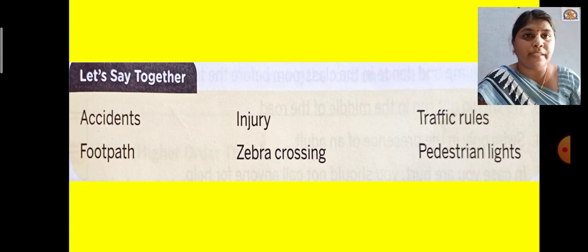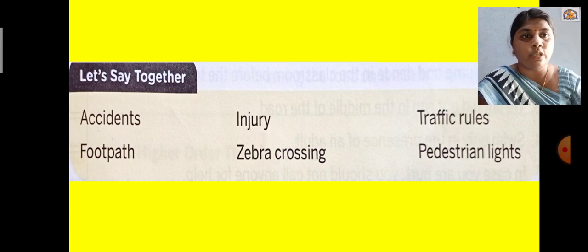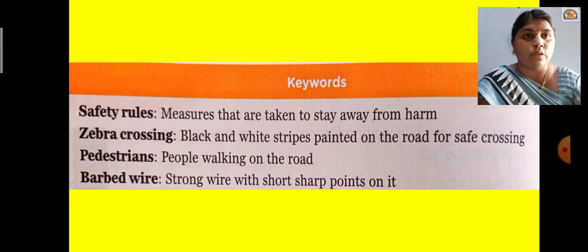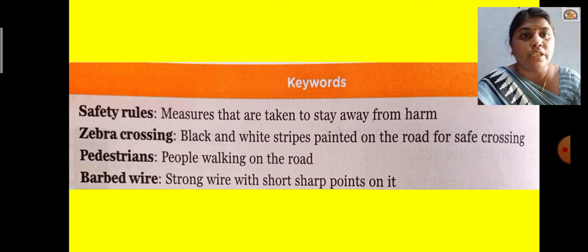Let's say these words together: accidents, injury, traffic rules, footpath, zebra crossing, pedestrian lights. You have to write all these spellings three times in your science notebook and learn them.